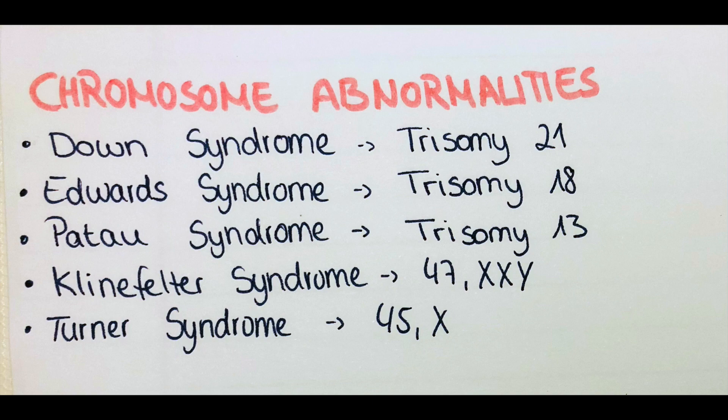Turner syndrome, also known as 45X, affects females, and in this condition the second X chromosome is partly or completely missing. Females affected by this syndrome present with a short neck, low-set ears, short stature, and swollen hands and feet. This syndrome is usually not inherited but rather develops during gamete production or early cell stages of development.